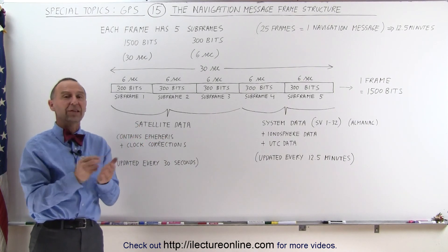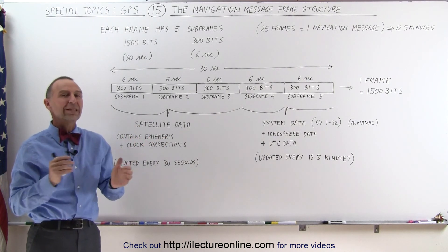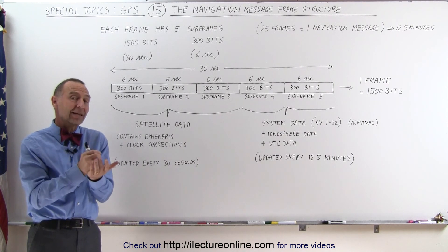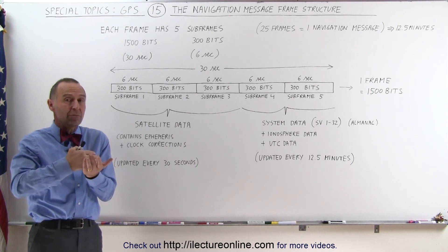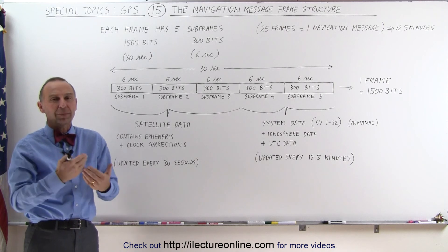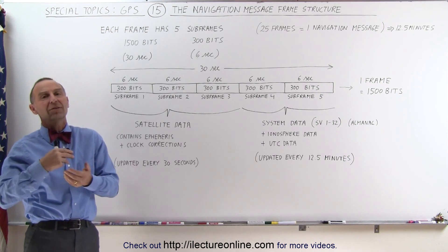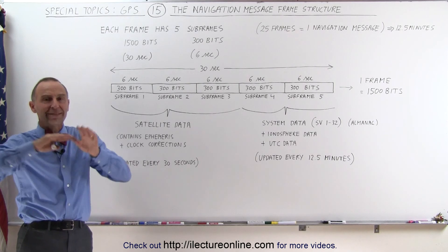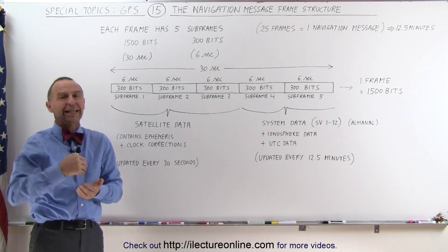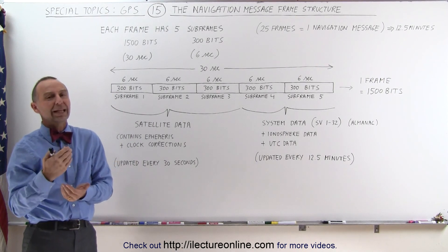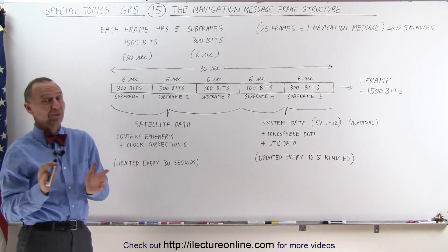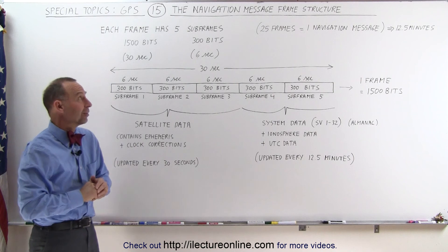The satellite needs to send a total of 25 frames. Each frame contains data that both needs to be repeated every 30 seconds for updates, and contains data of the entire GPS satellite system that only needs to be updated every 12 and a half minutes — not 12 and a half seconds, but 12 and a half minutes.